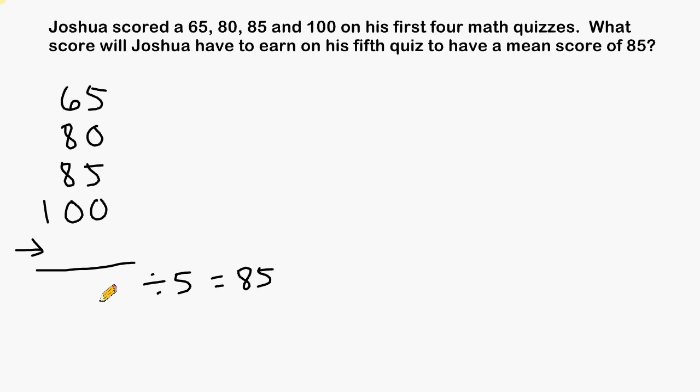So the first thing that we can do is to recognize that division is the opposite operation of multiplication. So even though we don't know what this total of the five scores is yet, we know that if we work backwards and do 85 times 5, that will give us what this unknown total will be.